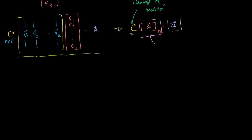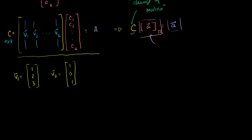Let's apply this a little bit. Let's say I have some basis b. We're dealing with R3. Vector v1 is (1, 2, 3) and vector v2 is (1, 0, 1). And I'll define basis b as the set of vectors v1 and v2. I'll leave it to you to verify that these are not linear combinations of each other, so this is a valid basis — they are not linearly dependent.